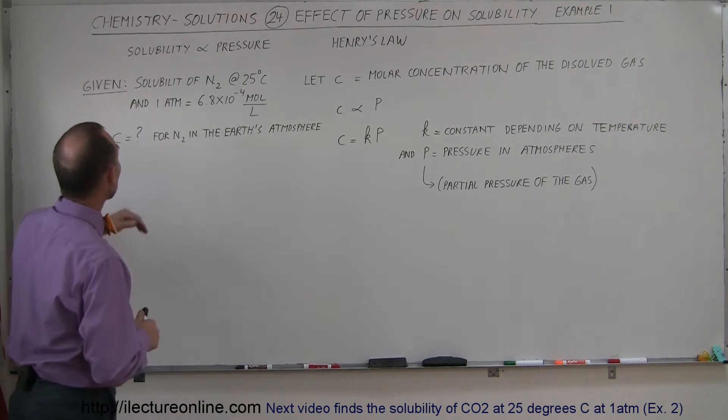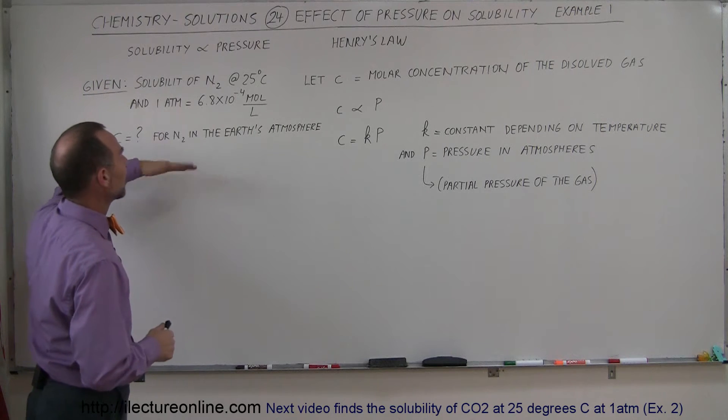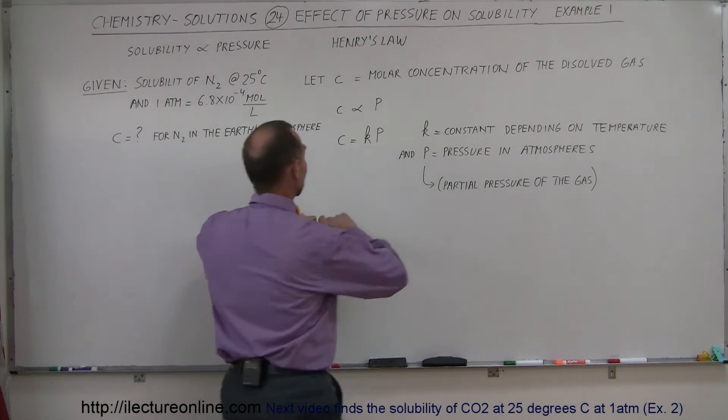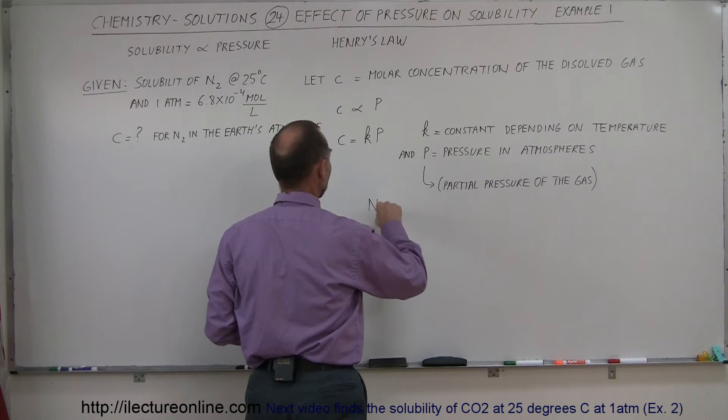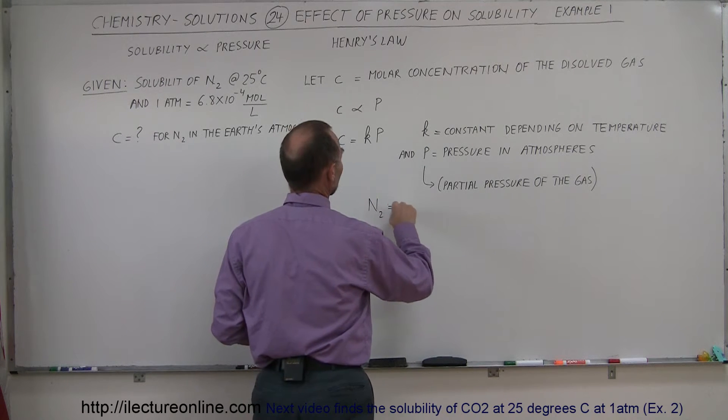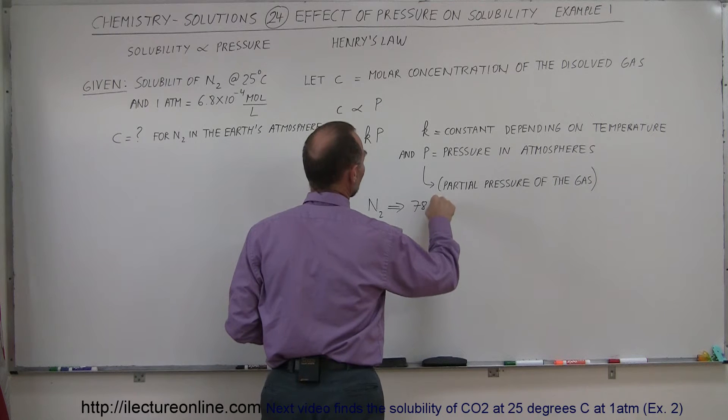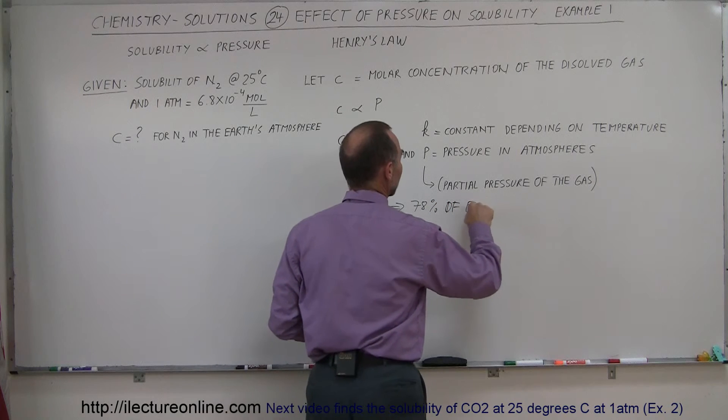So let's say we have some nitrogen gas in the atmosphere. We know that nitrogen gas takes up 78% of the Earth's atmosphere, so let's write that down. N2 represents 78% of Earth's atmosphere.